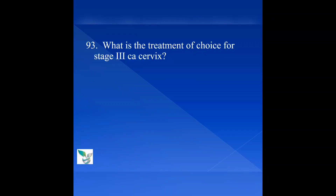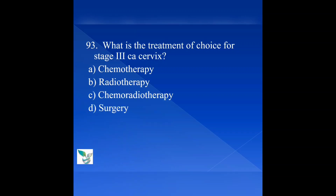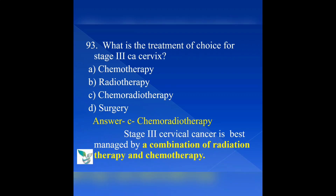Question number 93: What is the treatment of choice for stage 3 carcinoma cervix? Option A: chemotherapy. Option B: radiotherapy. Option C: chemoradiotherapy. Option D: surgery. The answer is option C, chemoradiotherapy. Stage 3 cervical cancer is best managed by a combination of radiation therapy and chemotherapy.